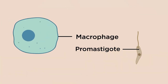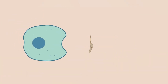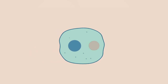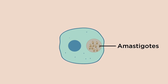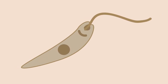Cells of the immune system detect the parasites and macrophages try to neutralise the promastigotes by engulfing them. However, inside the macrophage's phagolysosomes, the parasite changes into an amastigote form to survive.